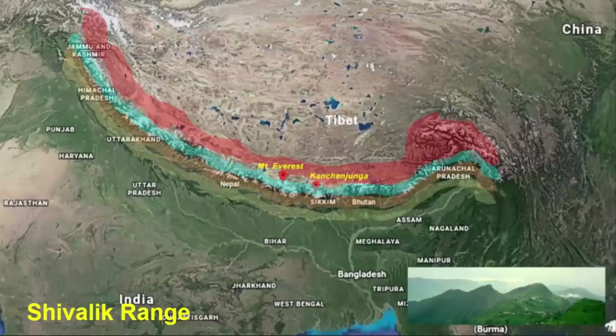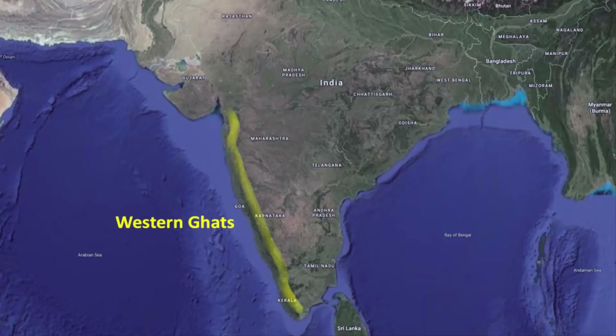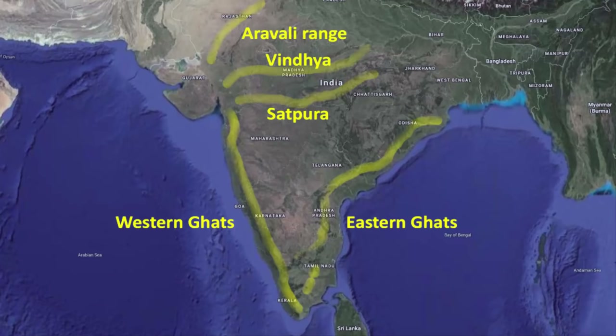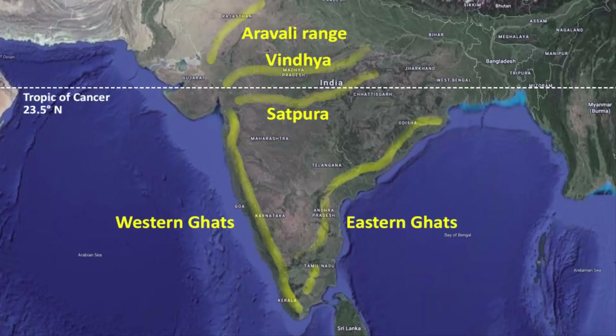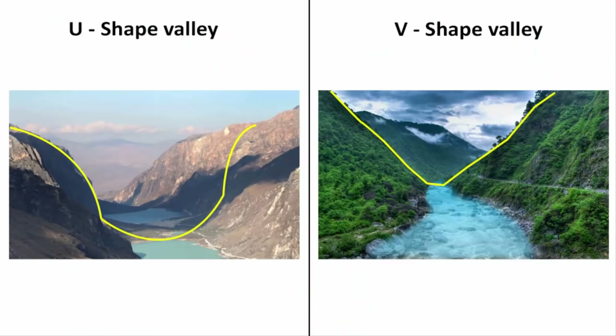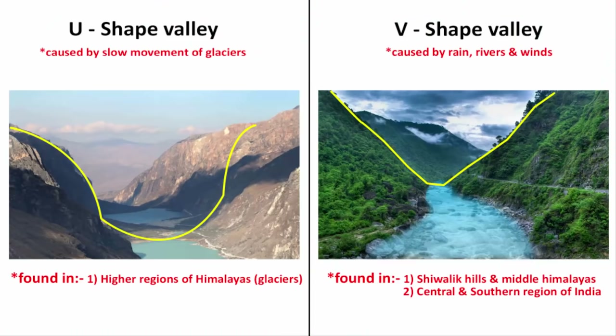Apart from north and northeast India, you will also find mountains in central as well as southern parts of India. Since there is no ice or glacier in the lower latitudes of India, naturally you will find V-shaped valleys that have been formed due to continuous erosion by rivers, streams, and wind.